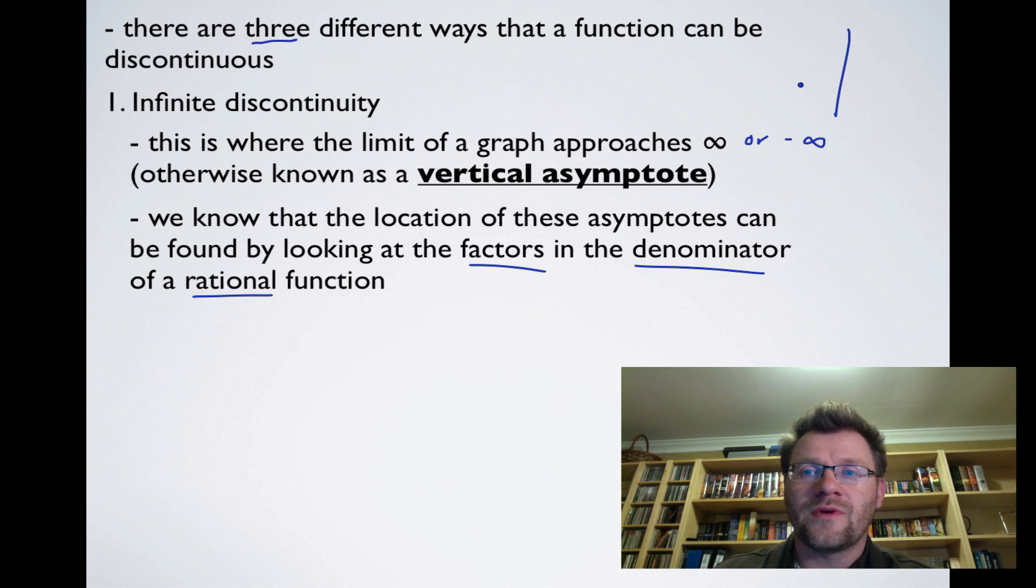So if we look at this rational function that has a vertical asymptote, say, at x equals 3, and the function looks something like that. We know that this is an infinite discontinuity because this is what kind of breaks up this graph. It allows us to not actually draw this thing without lifting our pencil off the paper.